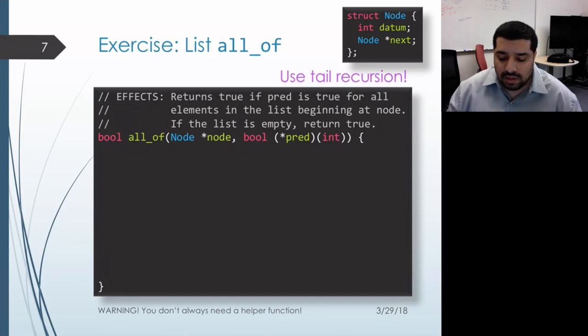Let's think about the different cases algorithmically before we dive into implementation. If I have an empty list, then it's trivially true that all of the non-existent items in that list satisfy that predicate. So my first case should be if my list is empty, then I would just return true.